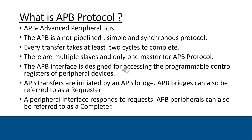APB supports multiple slaves but there is only one master. The APB bridge acts as a master and it initiates the requests, so it is known as the requester, and the peripherals that respond to those requests are known as completers.